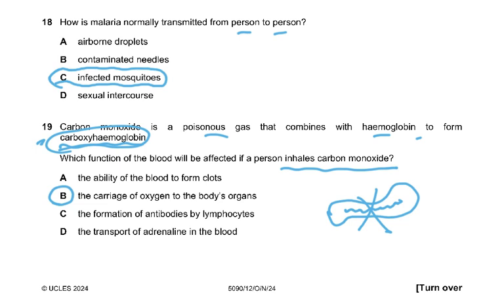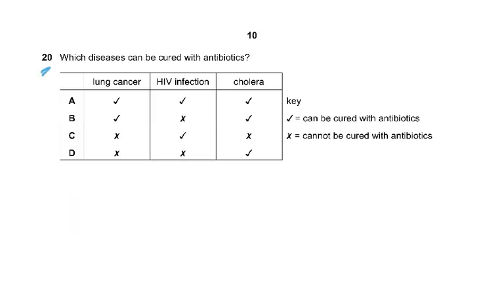Question 20: which disease can be cured with antibiotics? Lung cancer is not a bacterial disease, and HIV is a viral disease, so antibiotics cannot treat them. Cholera is a bacterial disease and can be treated with antibiotics. The answer is D.